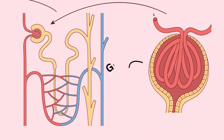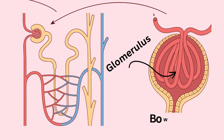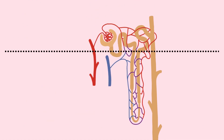Each nephron starts with a glomerulus, a cluster of coiled capillaries where blood is filtered. It's surrounded by Bowman's capsule, also called the renal corpuscle, which is located in the cortex.